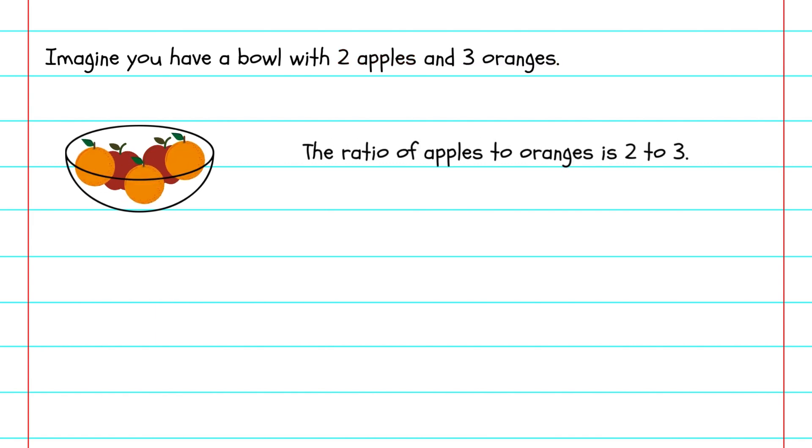For example, imagine you have a bowl with two apples and three oranges. The ratio of apples to oranges is two to three. We write it like this: 2:3. Easy, right?